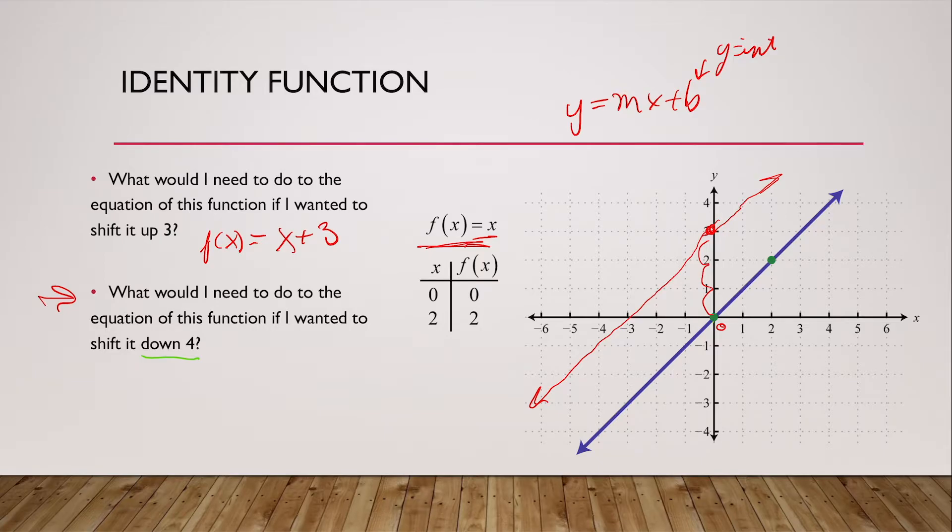Well, I would have to move my y-intercept down to here, right, at negative four. I'd be subtracting four. So my new function would be x minus four.